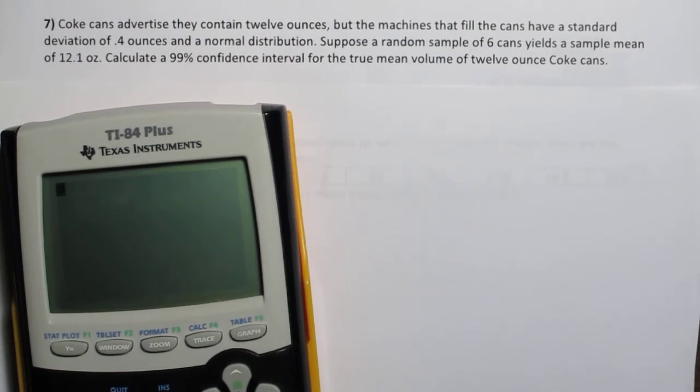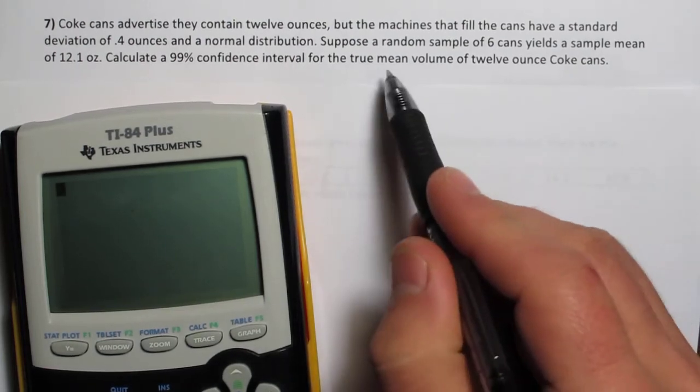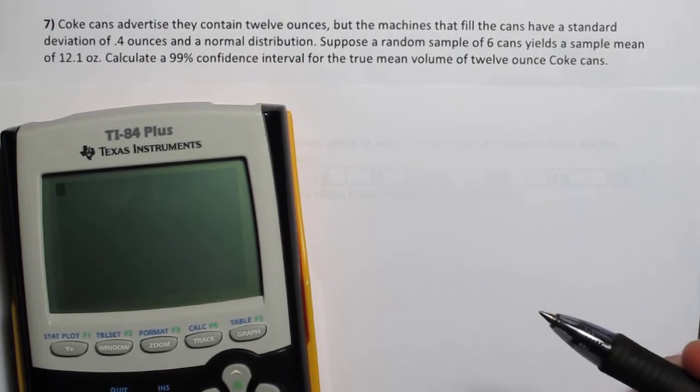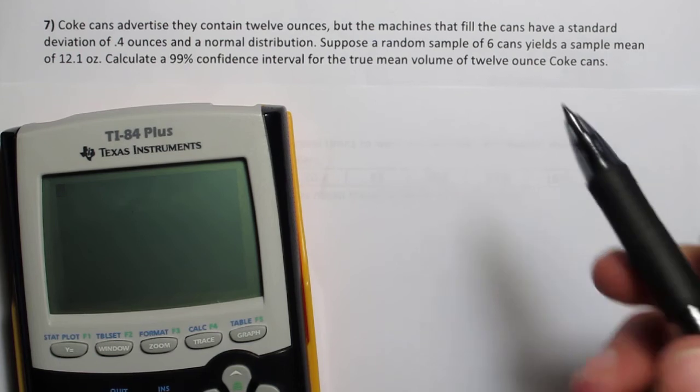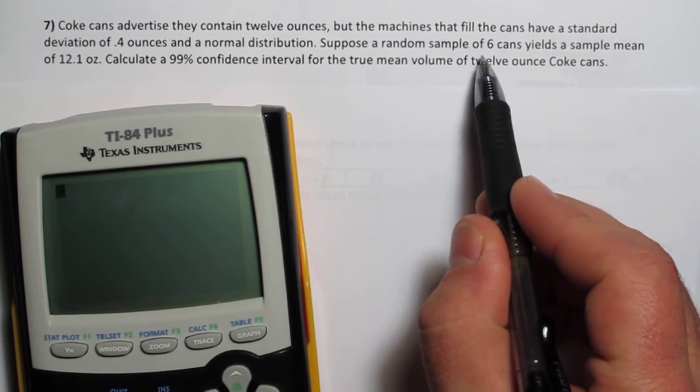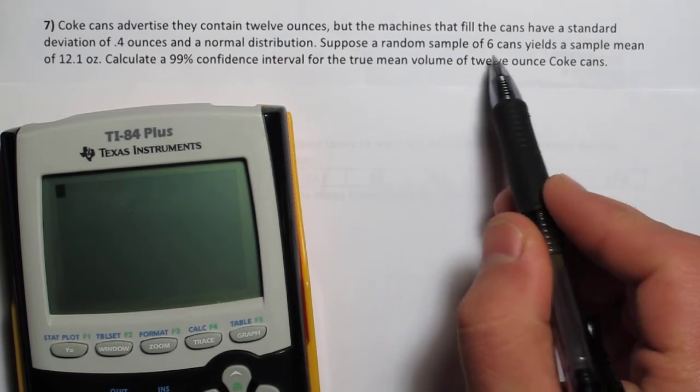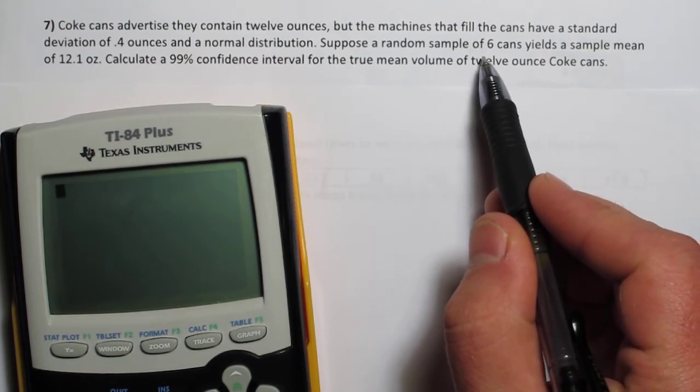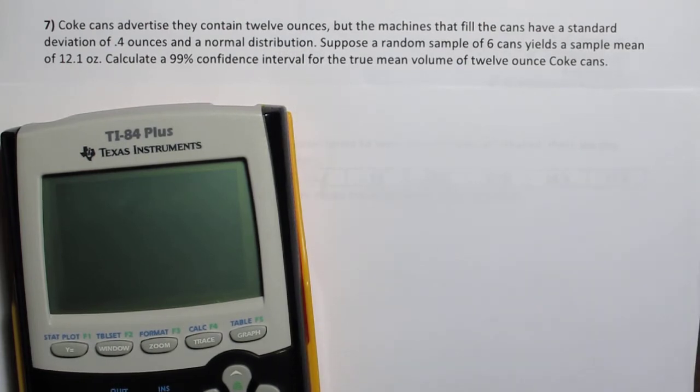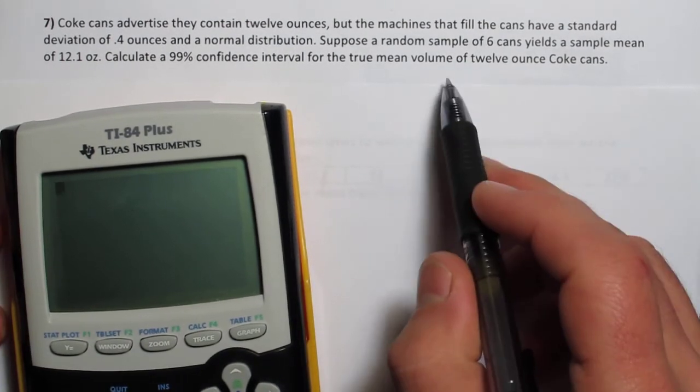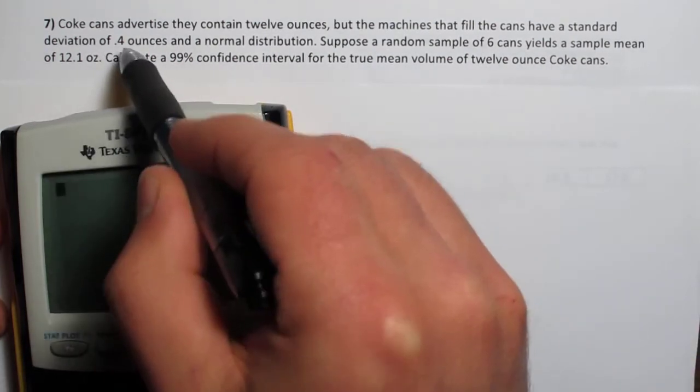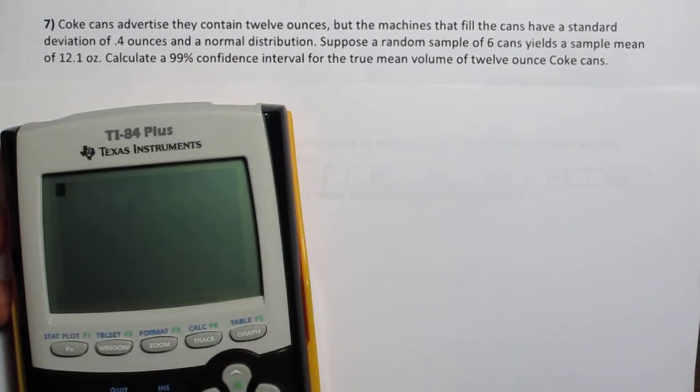In problem 7 we're trying to calculate a 99% confidence interval for the true mean value of 12 ounce Coke cans. Now it does say to assume all the conditions have been met, which is important because our sample size is only 6 cans. So the central limit theorem is not going to help us out much with the normal distribution. But it does say it does follow a normal distribution and it says assume the conditions have been met. So since we're working with a mean here, and since the population standard deviation is known, we're going to use a z-interval.